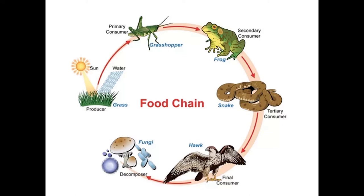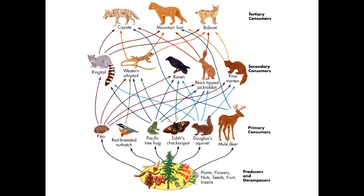Energy flow in an ecosystem can be illustrated in a number of ways. A food chain shows a one-to-one relationship of organisms showing the flow of energy in one direction. Starting with the producer shown as grass, a grasshopper eats the grass as a primary consumer, a frog is a secondary consumer that eats the grasshopper, the snake is a tertiary consumer that eats the frog, and a hawk is the quaternary or final consumer. In a food chain, the arrow points to the organism that does the eating. A food web is a more complicated but more realistic depiction, showing all possible feeding interactions since an organism typically does not eat only one food source.